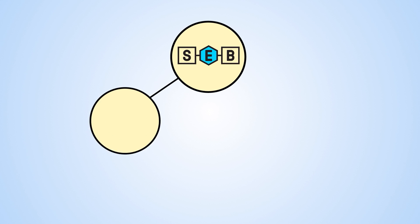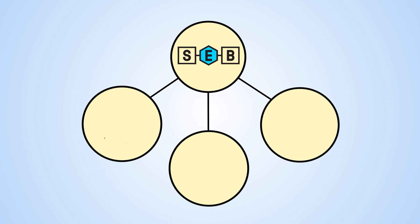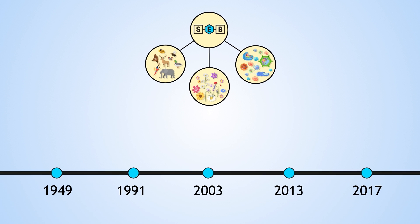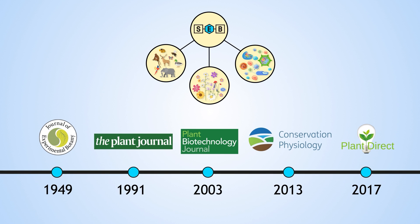The SEB now concentrates on three key areas of research – animal, plant and cell biology – and established a number of journals to reflect this.